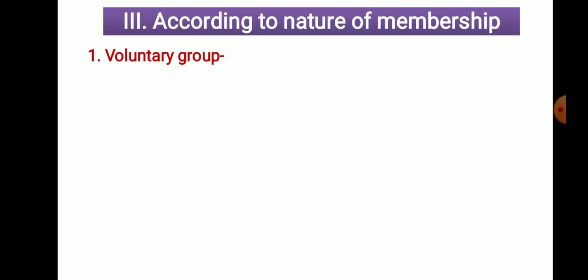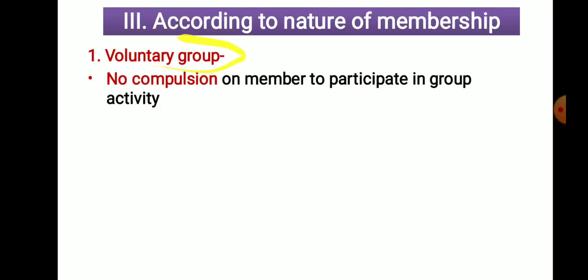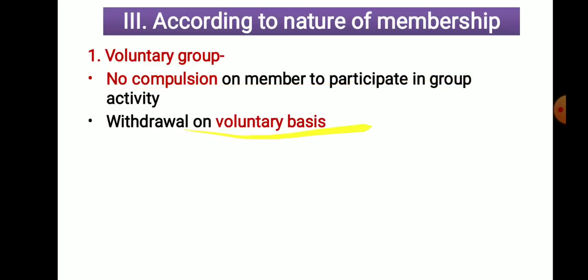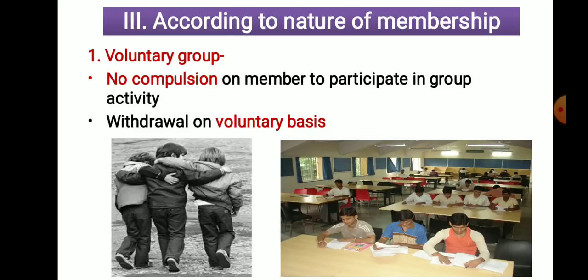The difference between primary and secondary groups will definitely be asked in the final exam — either the difference or an explanation of the classification of groups. The next classification is according to nature of membership. The voluntary group — the name itself indicates that you voluntarily become a member. There is no compulsion to participate, and withdrawal is on a voluntary basis, meaning you can leave the group at any time. Examples are friend circles, students gathered in a library, play groups, and youth clubs.